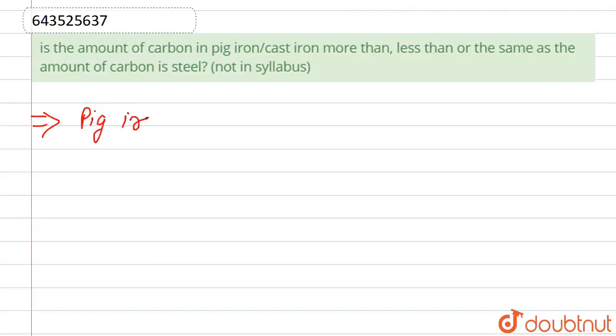Pig iron has about, the percentage of carbon is about 3.8 to 7 percent.